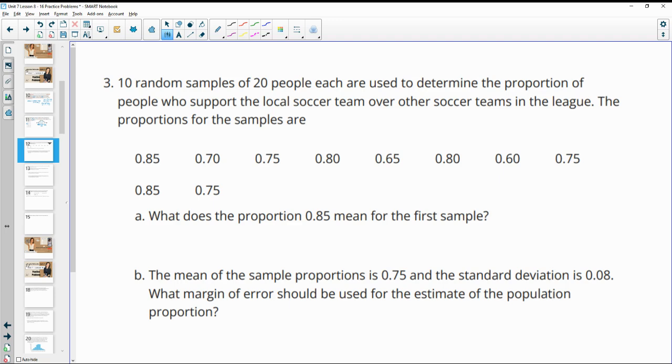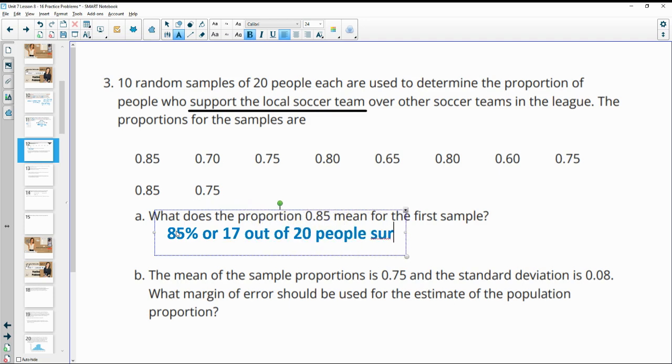Number three, 10 random samples of 20 people each are used to determine the proportion of people who support a local soccer team over other soccer teams in the league. The proportions for the samples are given. What does the proportion 0.85 mean in this situation? So 0.85 means 85% of the 20. So 85% or 17 out of 20 is 85%. So 17 out of 20 people surveyed support the local soccer team.